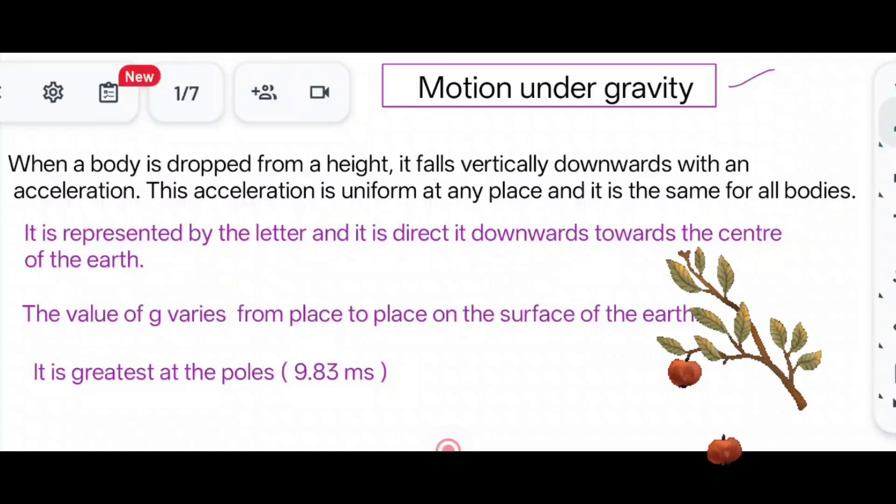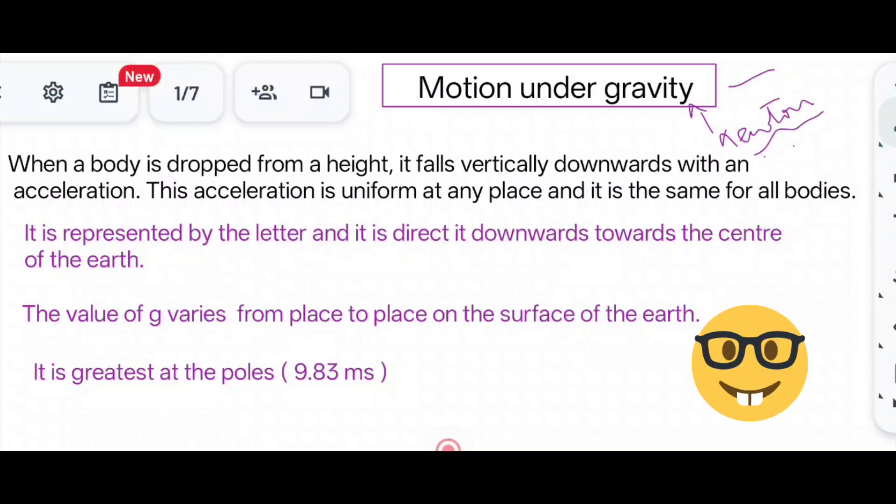When a body is dropped from a height, it falls vertically downwards with an acceleration. This acceleration is uniform at any place and is the same for all bodies. Newton was the person who discovered gravity. When an apple fell on his head, he gave the word gravity. It is the force of attraction that is everywhere on the earth. Whatever we throw from the ground, it will come down at a certain height.